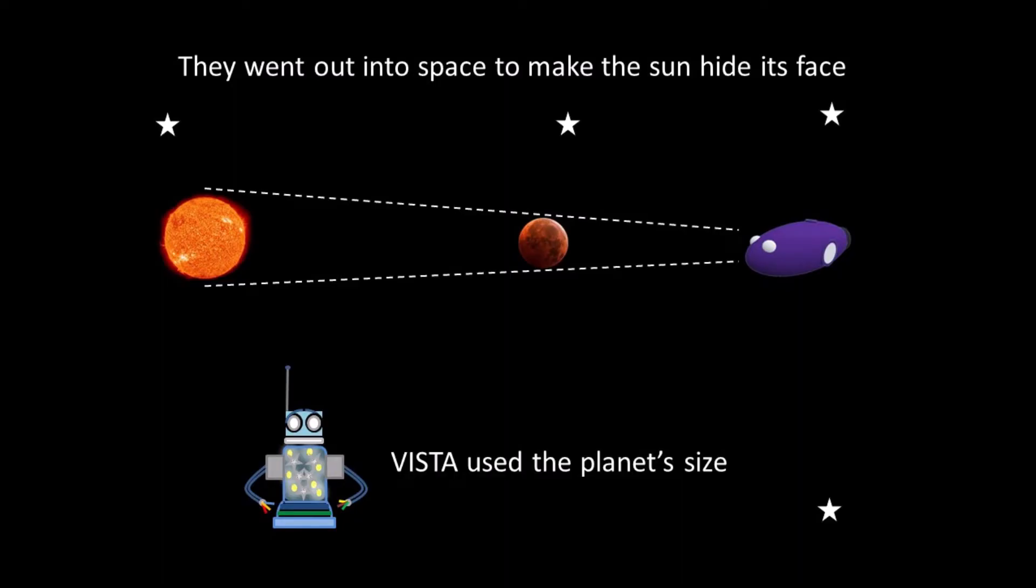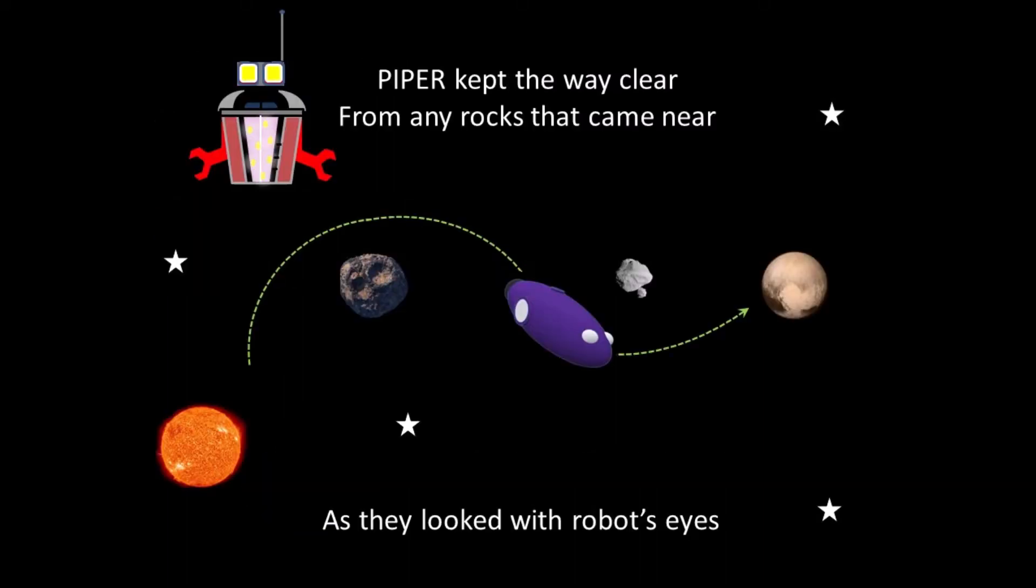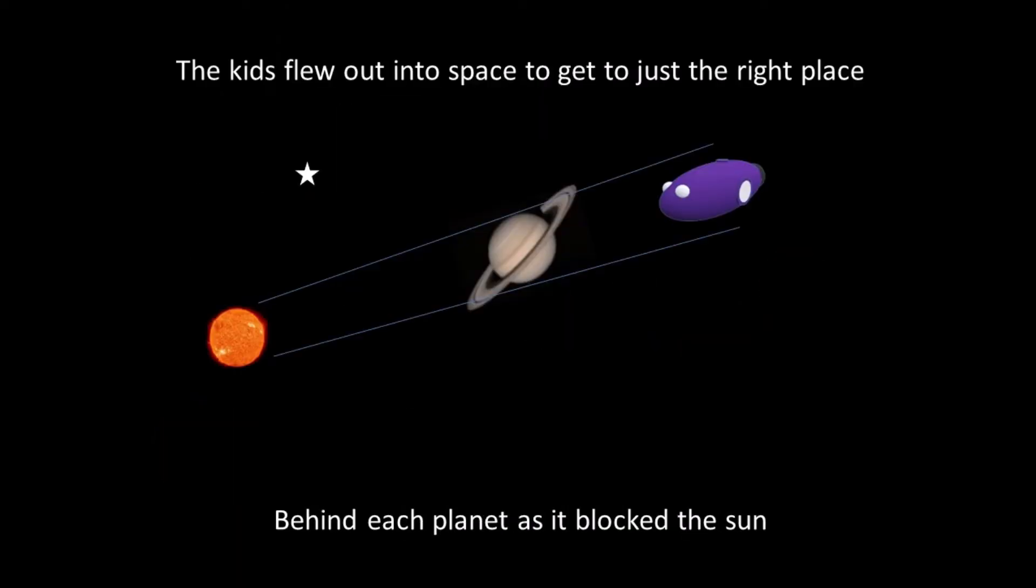VISTA used the planet's size. PIPER kept the way clear from any rocks that came near as they looked with robot's eyes.